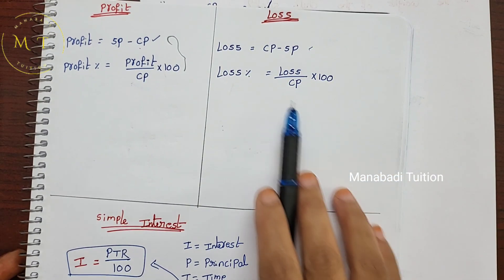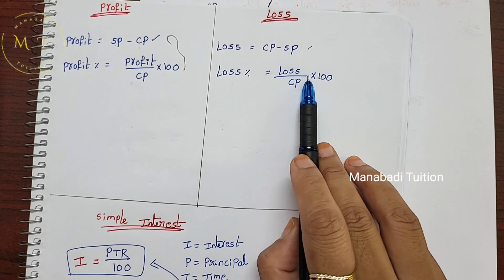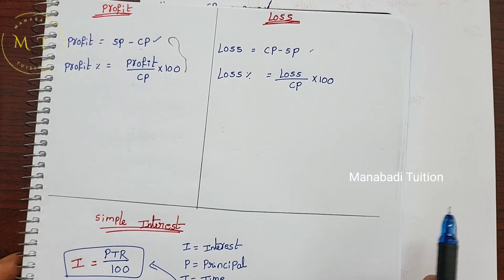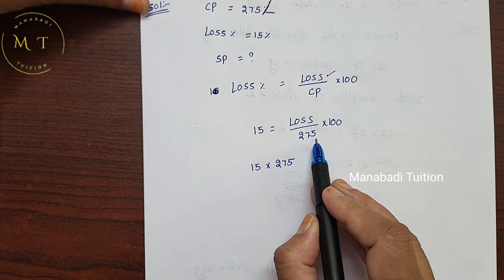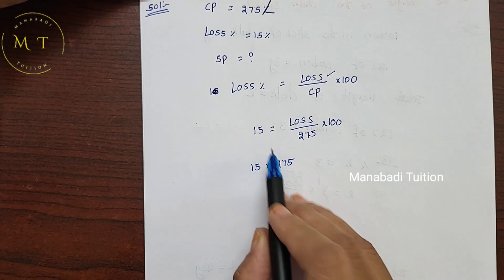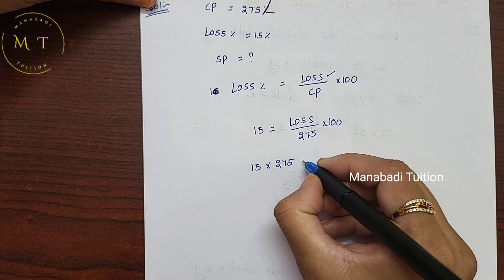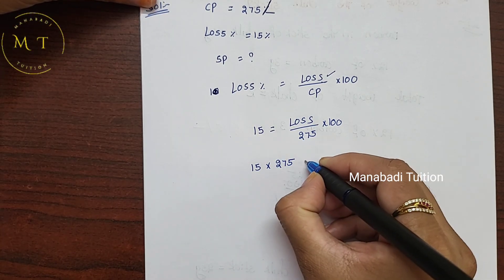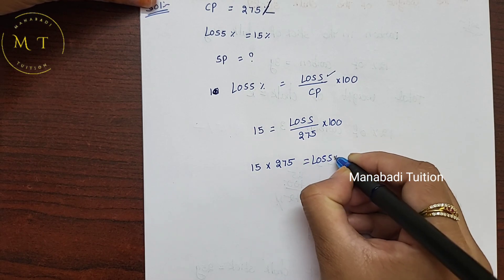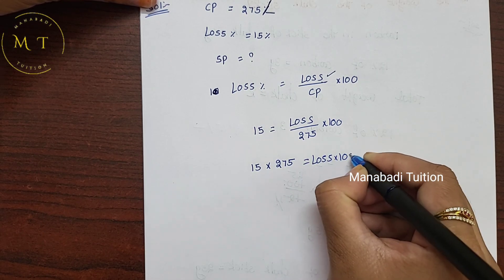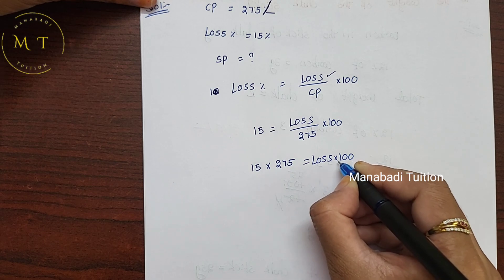This is the original formula. So 275 divided by 100, using the loss percentage value.